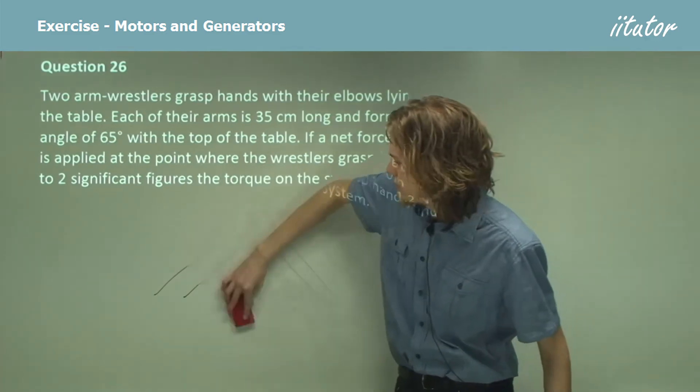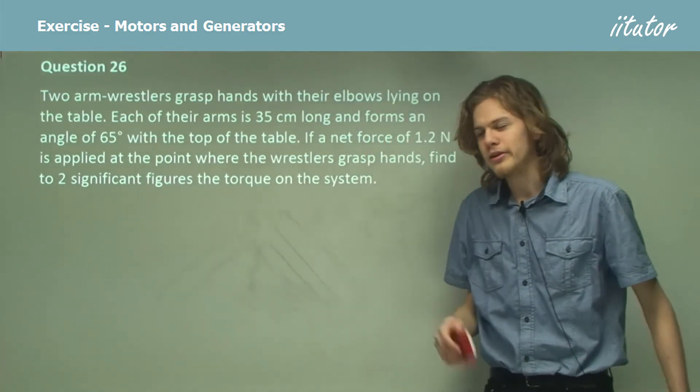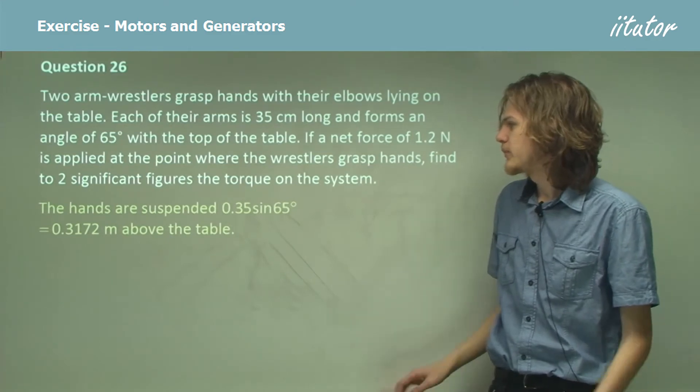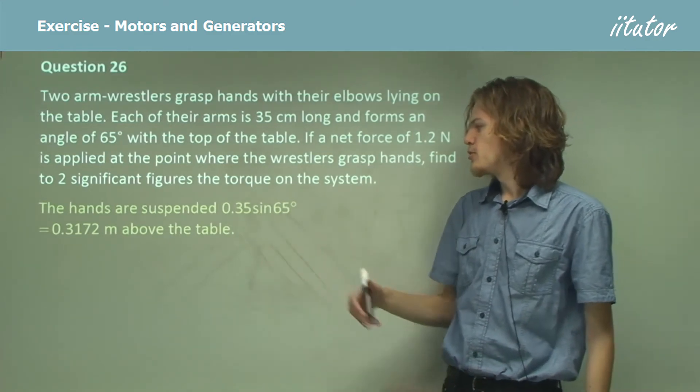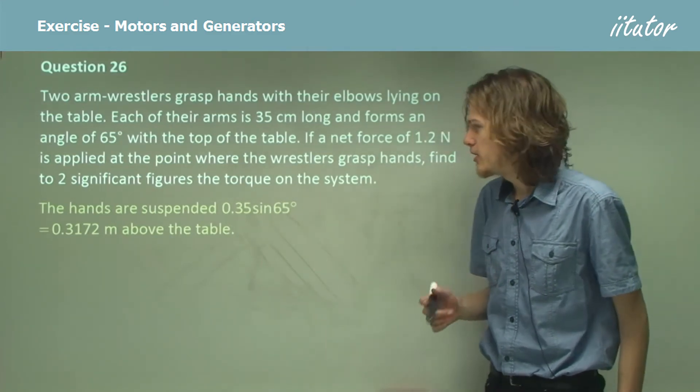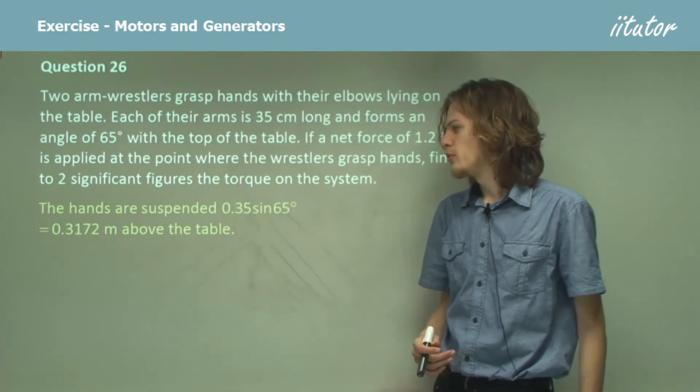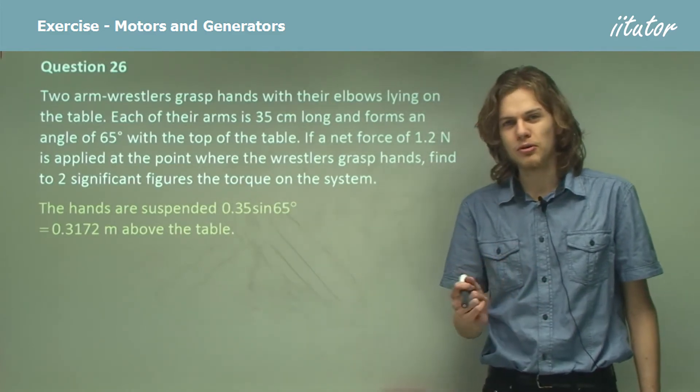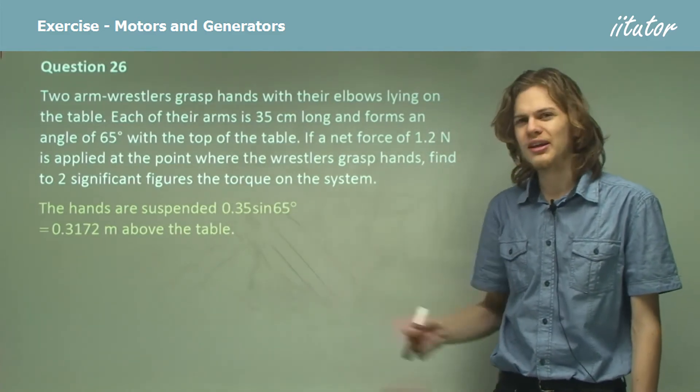So to find that distance, it's just a simple matter of using trigonometry. The hand is suspended at 0.35 times sine of 65, which equals 31.72 centimeters above the table, although we want to be measuring it in meters.